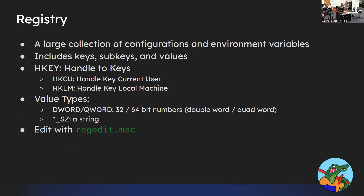The registry is like a custom file system in Windows where all the settings are stored. In Linux, everything is a text file — everything is configured in a file. In Windows, they have their own kind of database they call the registry, which includes a lot of settings about different Windows programs and Windows functionality. If you want to make your RDP settings, make your computer screen upside down, make things more secure or less secure — you go into the registry. Everything is in the registry.